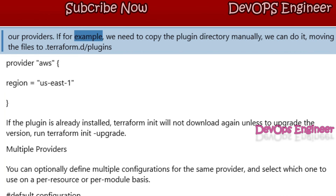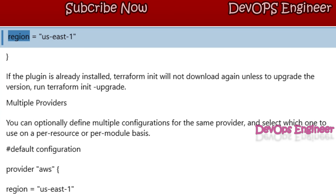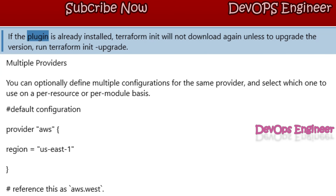If we need to copy the plugin directory manually, we can do it by moving the files to `.terraform.d/plugins`. If the plugin is already installed, Terraform INIT will not download it again unless you need to upgrade the version — in that case, run `terraform init -upgrade`.